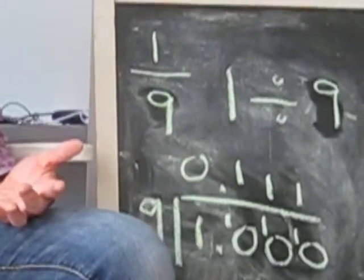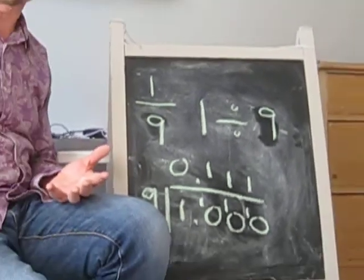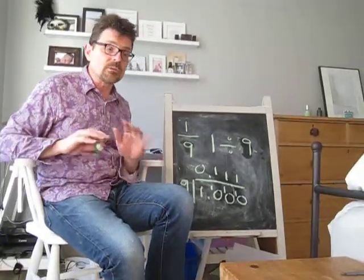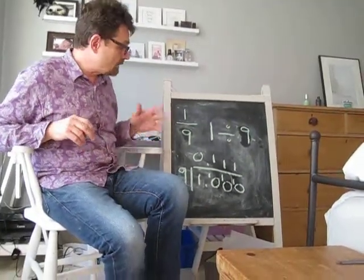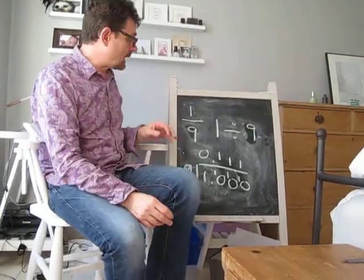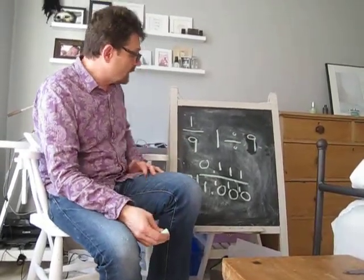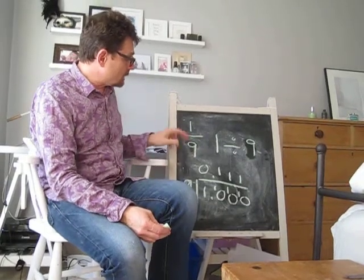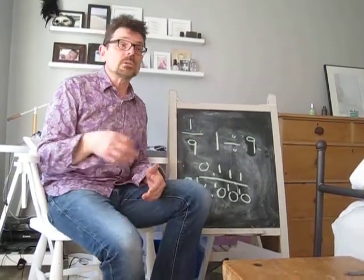It just recurs, and I can carry on doing that until I retire as a teacher, which would be very boring. But I could do that and it would be 0.11111 recurring. We won't do that. I think three decimal places is quite enough. So the equivalent decimal of one ninth is 0.111.